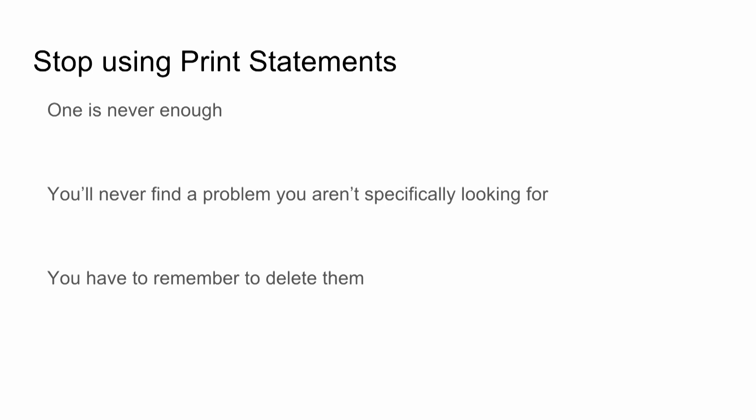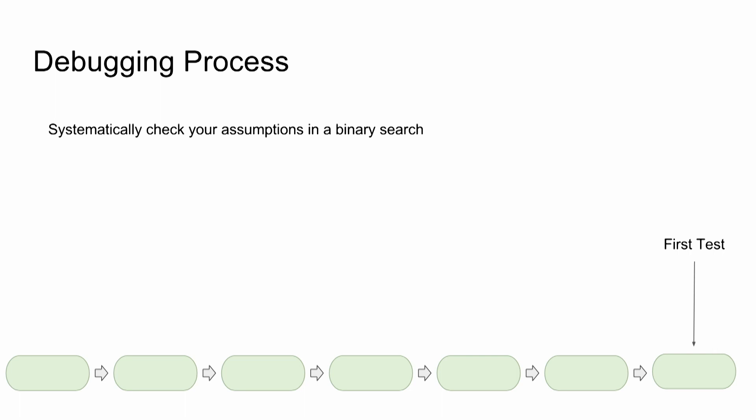Different people debug in different ways. A friend told me he just thinks really really hard and then spots the bug in one go — that doesn't always work for me. Here's another way: first, test to see if it works. If that doesn't work, logically bisect the problem in the middle — take a guess as to where the bug is and look there. Check your assumptions. Something about your assumption is wrong, so you keep checking and spotting places to figure out where your assumption doesn't match reality. And there it is — that's the bug.